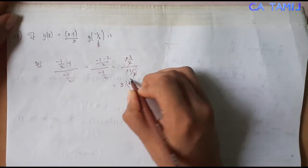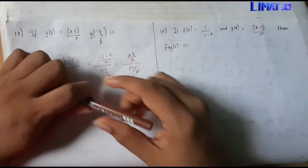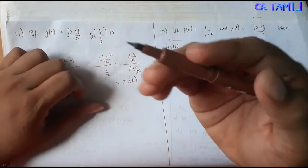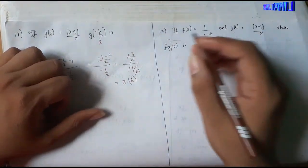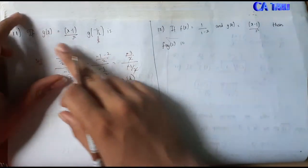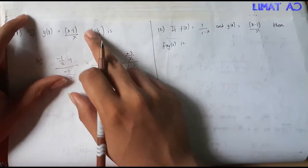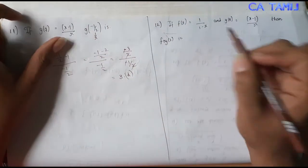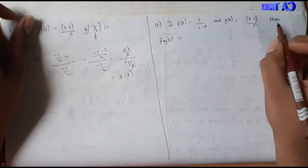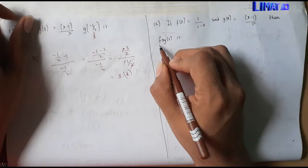So this is the option for sum number 11. Sum number 12. Sum number 11 is straightforward. Sum number 12 — this is about the direction of x.